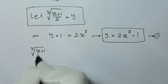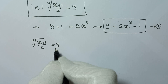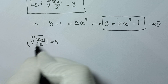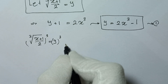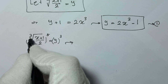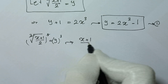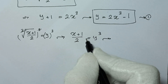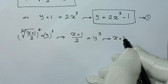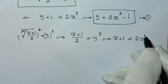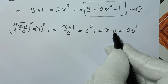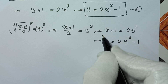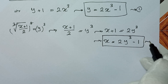From the substitution, cube root of (x+1)/2 equals y. In the next step, we raise both sides to the power of 3. The cube and cube root cancel, giving (x+1)/2 equals y³. Multiplying both sides by 2 gives x plus 1 equals 2y³. Taking 1 to the other side: x equals 2y³ minus 1. We call this equation 2.